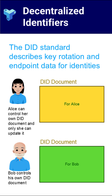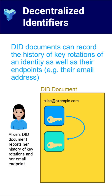That's where the W3C decentralized identifier standard, DIDs, comes in. DIDs were designed to solve this problem, along with another major issue — the endpoint problem. Normally, to verify an identity, you need to check a trusted authority, like a certificate provider. But what if you don't want to depend on a central authority? What if you want an identity system that works anywhere, without relying on a single organization? DIDs solve this by creating a self-sovereign identity system, where each DID is controlled by the entity it represents.